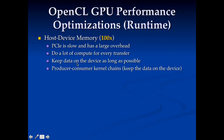Keep your data on the device as long as possible. Run as many kernels as you can before you have to move your data back and forth to the device. One approach that works really well here is producer-consumer kernel chains. You have one kernel that takes in the input and keeps its output on the GPU for the next kernel to use it. This prevents you from having to move data back and forth.